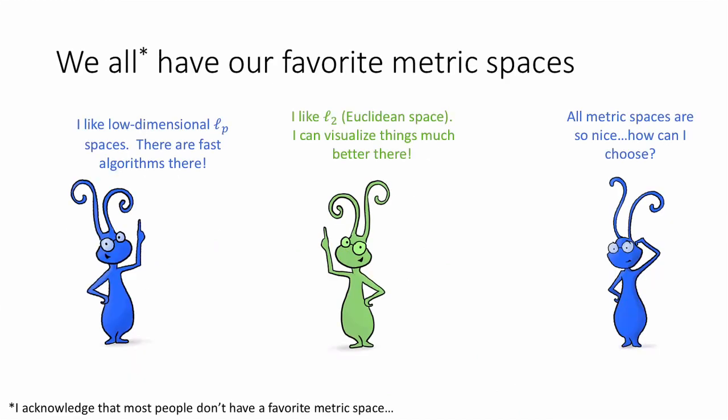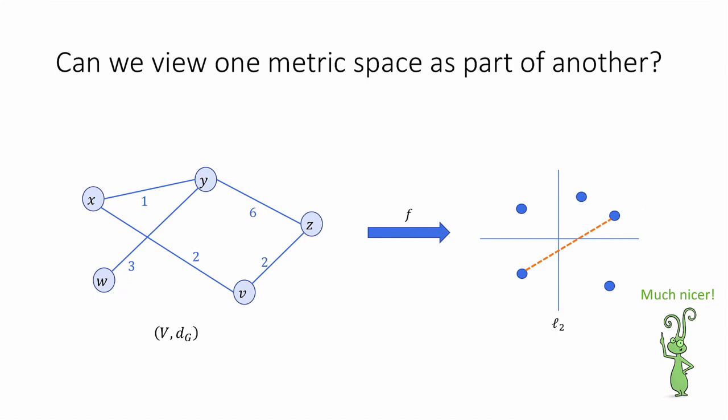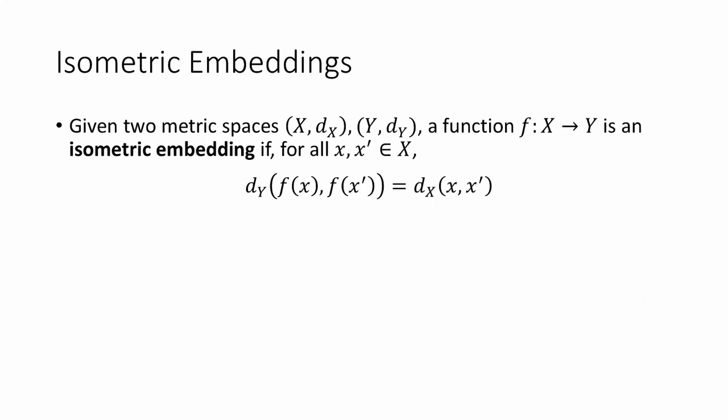So we all have our favorite metric spaces. For example, maybe we like metric spaces which are low-dimensional Lp spaces, because there are very fast algorithms in smaller dimensions. Or maybe you like L₂, Euclidean space. For many of us, it's more natural to visualize things in L₂. So given that we like some metric spaces more than others, at least for certain applications, a natural question is whether we can view one metric space as part of another. That is, given some nasty, hard-to-work-with metric space, can we somehow embed that into your favorite metric space?